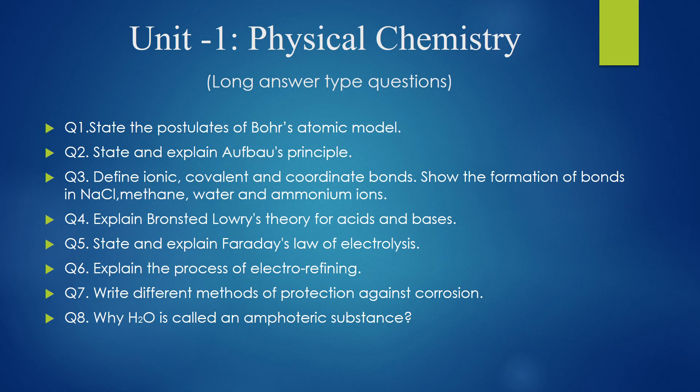Define ionic, covalent, and coordinate bond. The formation of bonds in NaCl, methane, water, and ammonium ion — mostly it can ask the definition of any kind of bond with examples. So you have to show the formation of bonds in different molecules or different compounds.